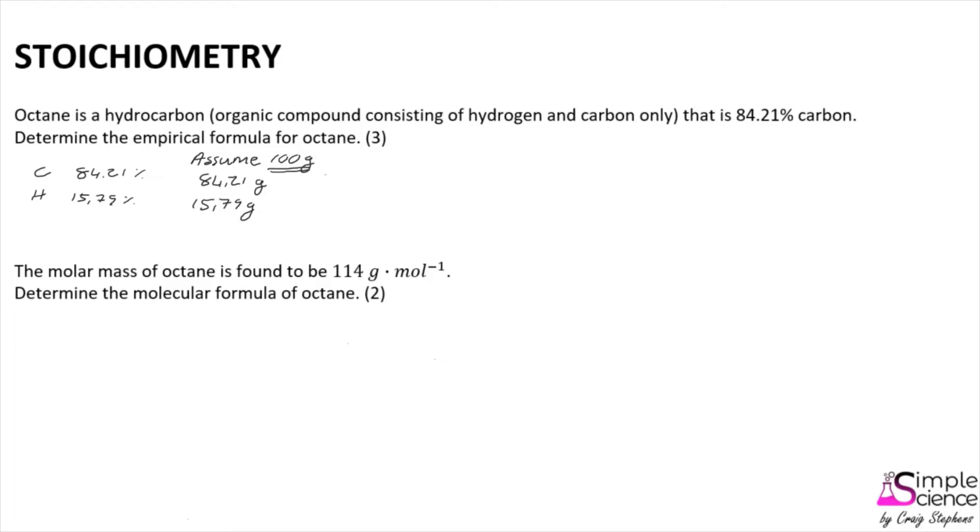We can then say that 100 grams of carbon is not particularly useful to us because we can't compare that to a mass of hydrogen. But what we can do is calculate the number of moles of carbon using the molar mass for carbon, which is 12, to see that 84.21 grams of carbon is 7.0175 moles of carbon.